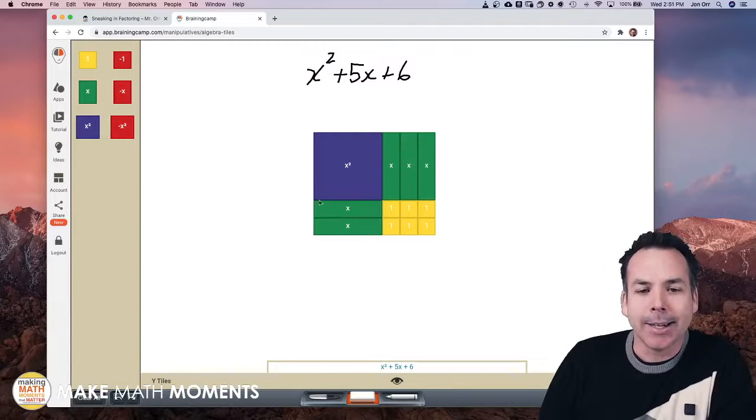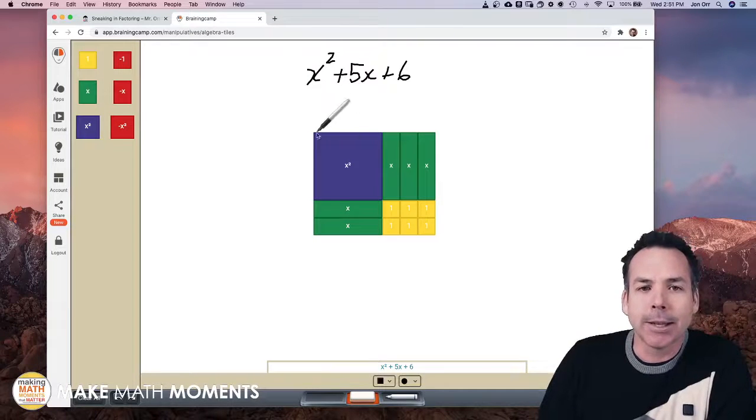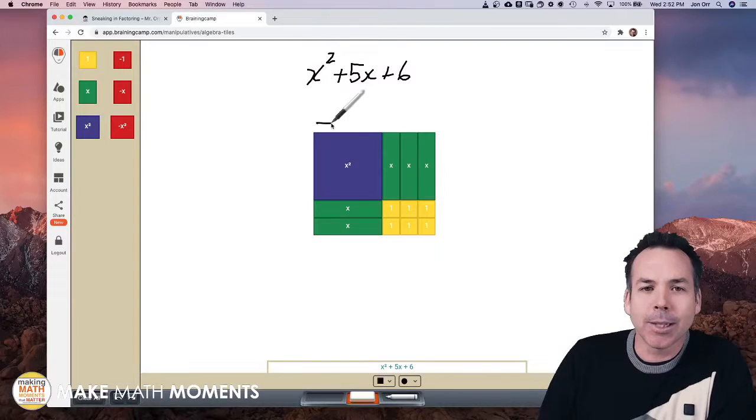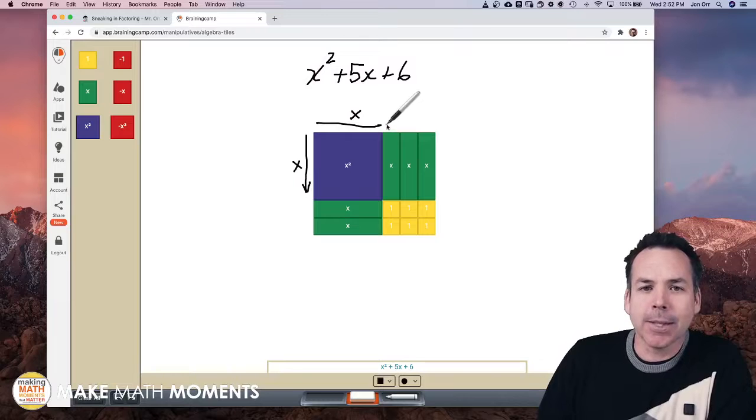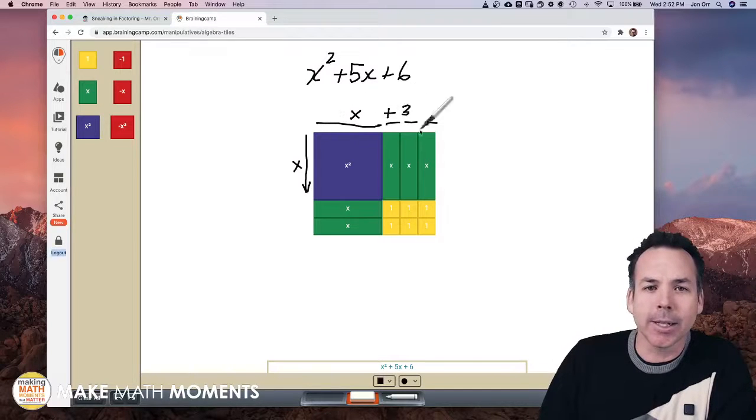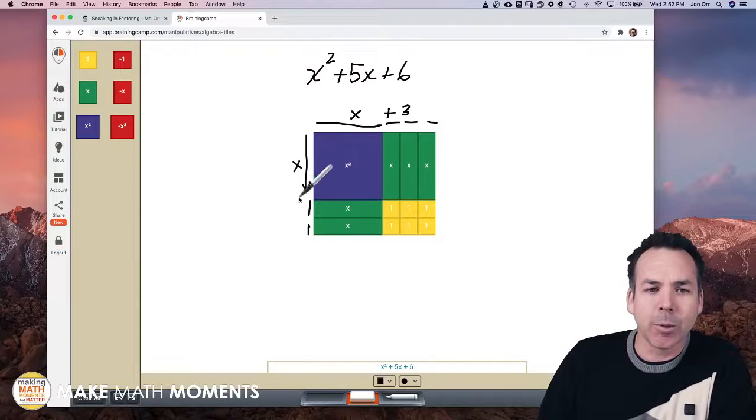Students will start to see that okay well if I'm going to write the dimensions, this area was x squared so this length is x and this length was x, because it's x squared. This length was one and one and one, it's one one one, so that length is one one one. So this whole length is x and then three or x plus three. This whole length is x plus three and this length is one and this length is one, this whole length is two, so x plus two or is x plus two.